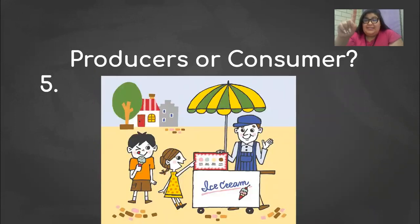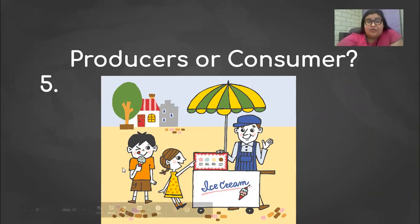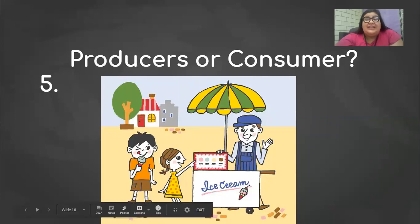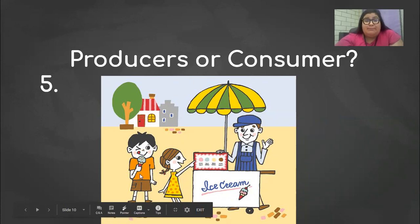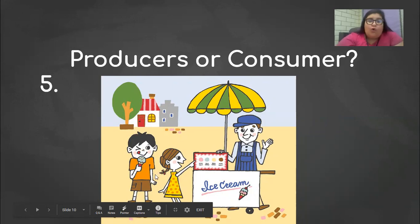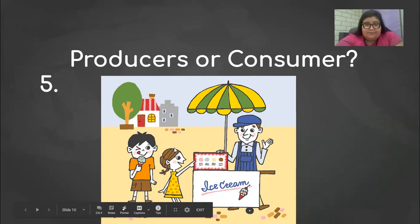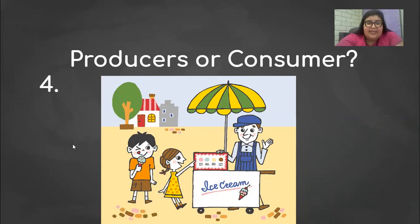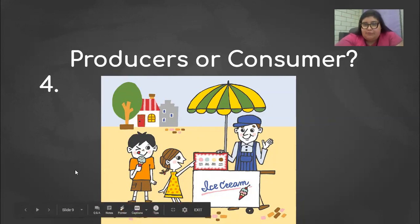Number four — pay attention. I'm talking about the kids, the children right here. Are they producers or are they consumers? If you need help, go to the beginning of the video. Remember, producers are people who make goods and services and consumers are people who buy goods and services. I'm talking about the kids getting the ice cream — are they producers or are they consumers? That is number four.